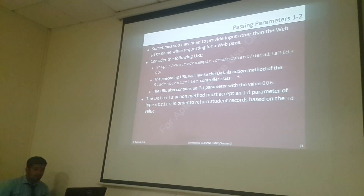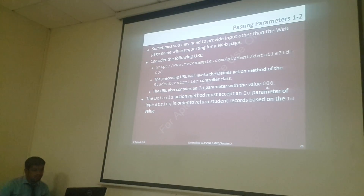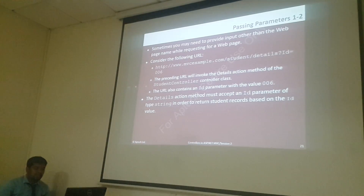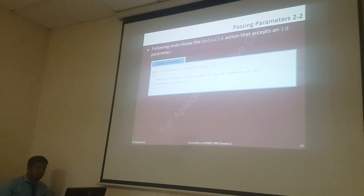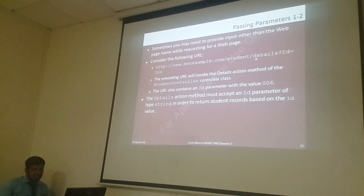This URL invokes the Details action method of the StudentController class, and the URL also contains the ID parameter value. So it is a parameter for Details. Whenever if you are passing a parameter and you have a method like public ActionResult Details(string id), if you want to call the method, so that time you should write: Student slash Details question mark id equals whatever the value — you can use it like that.